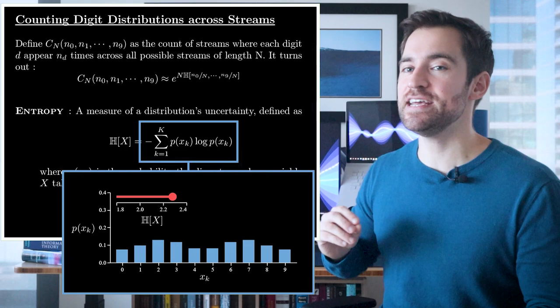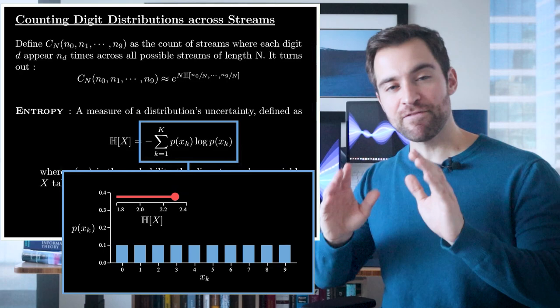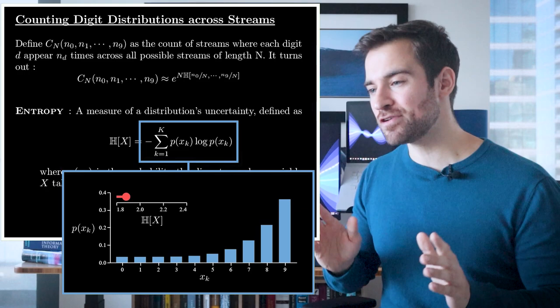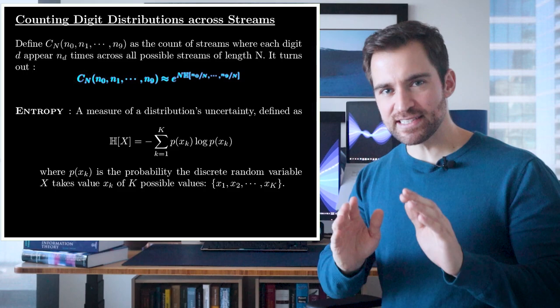We could represent those probabilities as a bar graph and say entropy is just a measure of this bar graph. If the bar graph becomes more uniform, then it's more uncertain and the entropy increases. In fact, the entropy is maximized at the uniform distribution. If the bar graph becomes more concentrated, then the entropy falls.